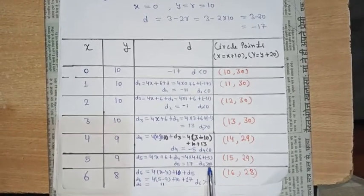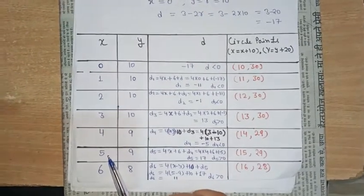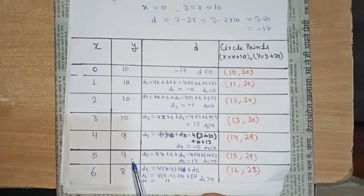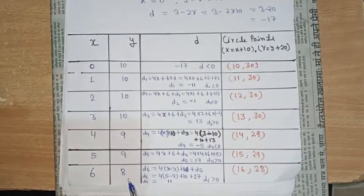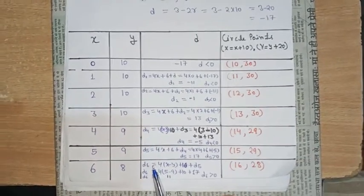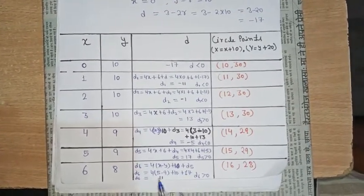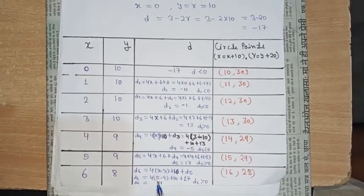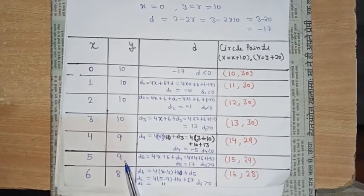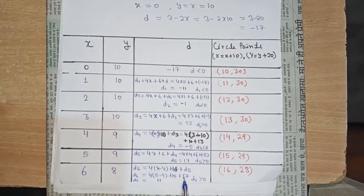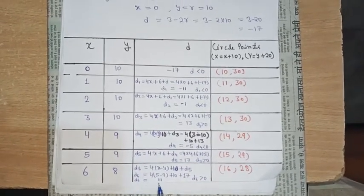We compare d5 with 0. d5 = 17 is greater than 0. Again x-axis gets an increment: 5 becomes 6. And y-axis gets a decrement: 9 becomes 8. The formula d6 = 4(x - y) + 10 + d5 = 4 into 5 (previous x) minus 9 (previous y) + 10 + 17, giving d6 = 11.